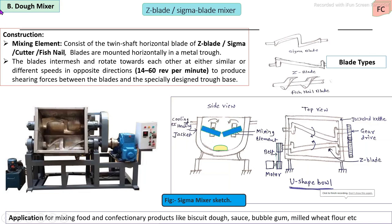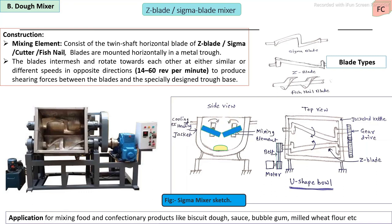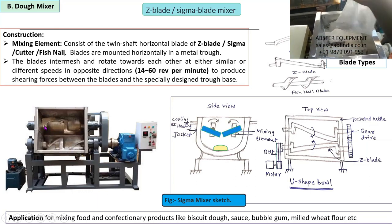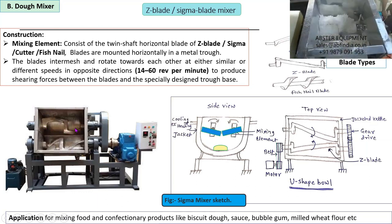The second category is the dough kneader. There are a number of mixing element designs, including the sigma blade, Z-blade, and fish-tail blade. The proper mixing blade is selected depending on the physical properties of the raw material. Dough mixers are used for high viscosity, dough-like materials. High power is used along with a mixing element that covers the maximum area. The Z-blade or sigma-type mixing element consists of two mixing elements that rotate in opposite directions inside the mixing vessel.